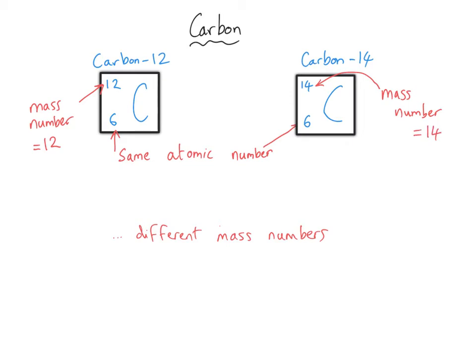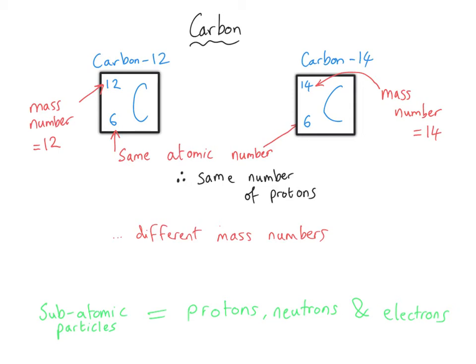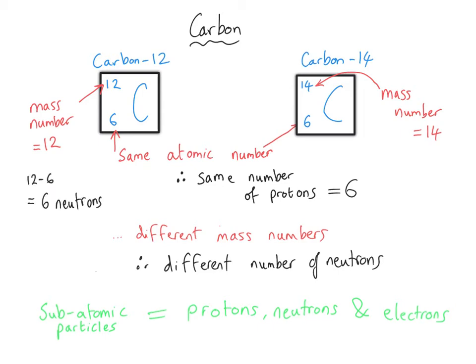You could be asked a very similar question to comment on the similarities and differences of these isotopes, but you might be asked to focus on the subatomic particles. These elements have got the same atomic number, which means they've got the same number of protons — six. Whereas they've got different mass numbers, and that means that they've got a different number of neutrons. When you get given actual excerpts from the periodic table, actually use them and say six protons for both of them. The carbon on the left has got six neutrons, the carbon on the right has got eight — 14 take away six.